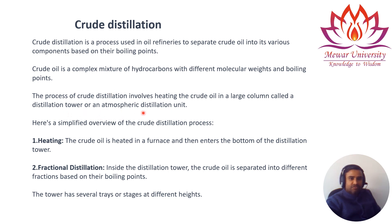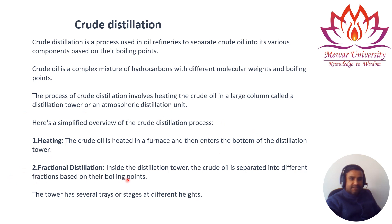Here is a simplified overview of the crude oil distillation process. The first step is heating: we heat the crude oil in a furnace, and it then enters the bottom of the distillation tower. Once the crude oil is heated, the steam of the crude oil travels to the bottom of the distillation tower. The second step is fractional distillation.